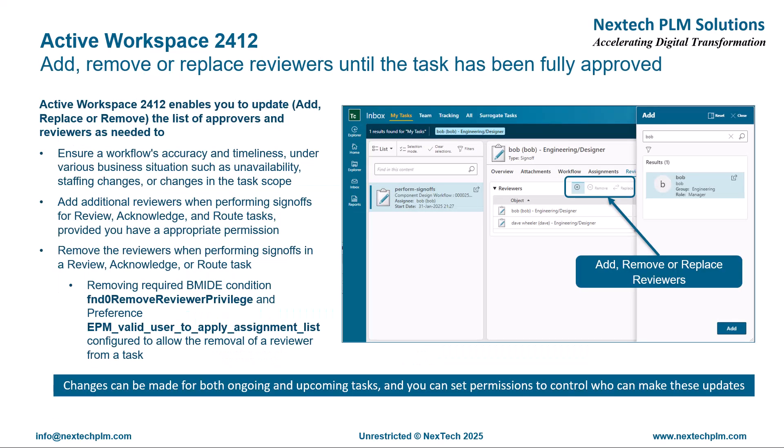Active Workspace 2412 enables you to add, remove, or replace approvers and reviewers as needed, until the task has been fully approved. This helps you ensure workflow accuracy and timeliness under various business situations such as unavailability of reviewers, change in reviewers, or changes in task scope. Users with appropriate permission can update the list of approvers and reviewers. This can be controlled with simple configuration in BMIDE and preferences.